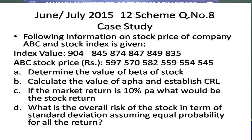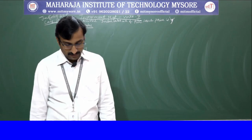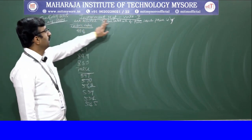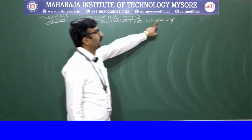The price of ABC stock Y is: 597, 570, 582, 559, 554, and 545. The questions are: first, determine the value of beta; second, calculate the value of alpha and establish the Characteristic Regression Line (CRL); third, if the market return is 10% per annum, what would be the stock return and overall risk in terms of standard deviation assuming equal probability for all returns.